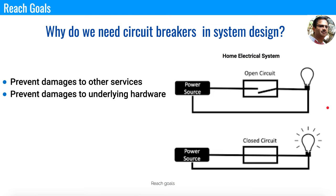It also prevents damage to the underlying hardware. Let's say you have a lot of traffic coming into your system and the response time is taking too long, and clients are still requesting services. What happens here is the CPU can spike, and when the CPU spikes it adds a lot of processes. In that case the hardware gets heated and it can damage your hardware as well.